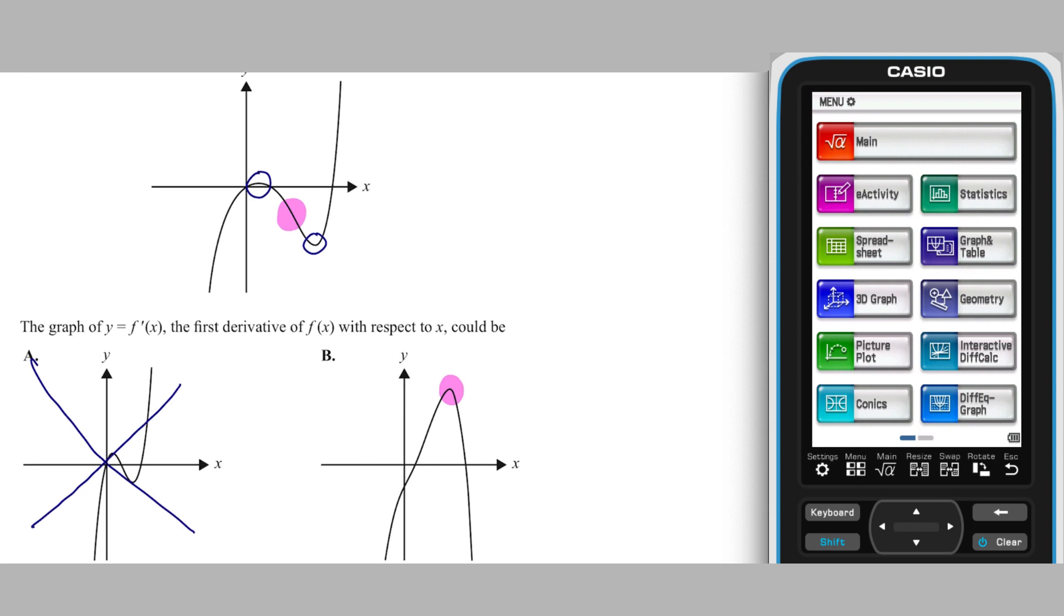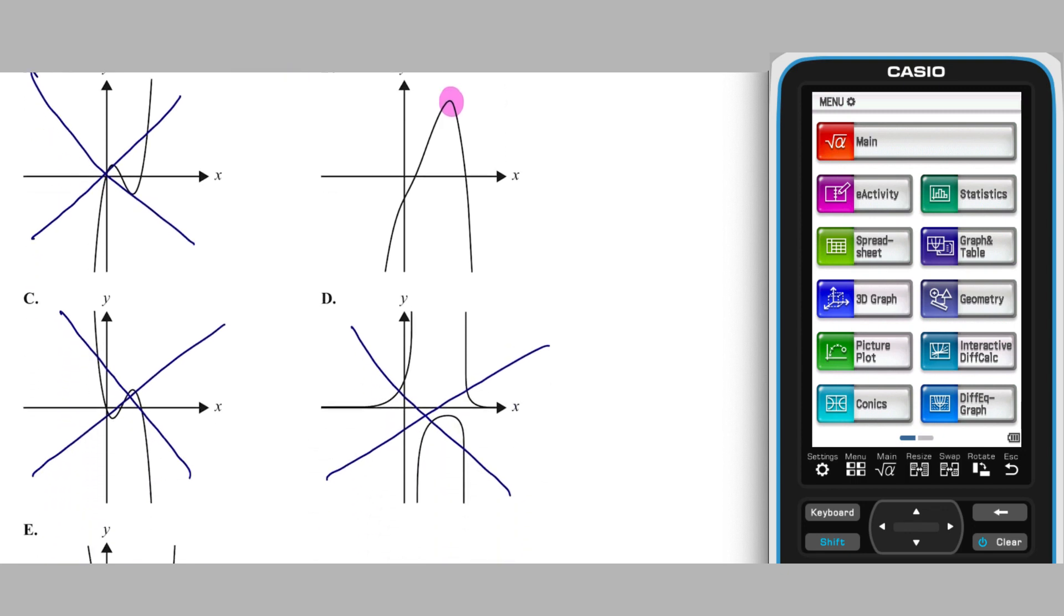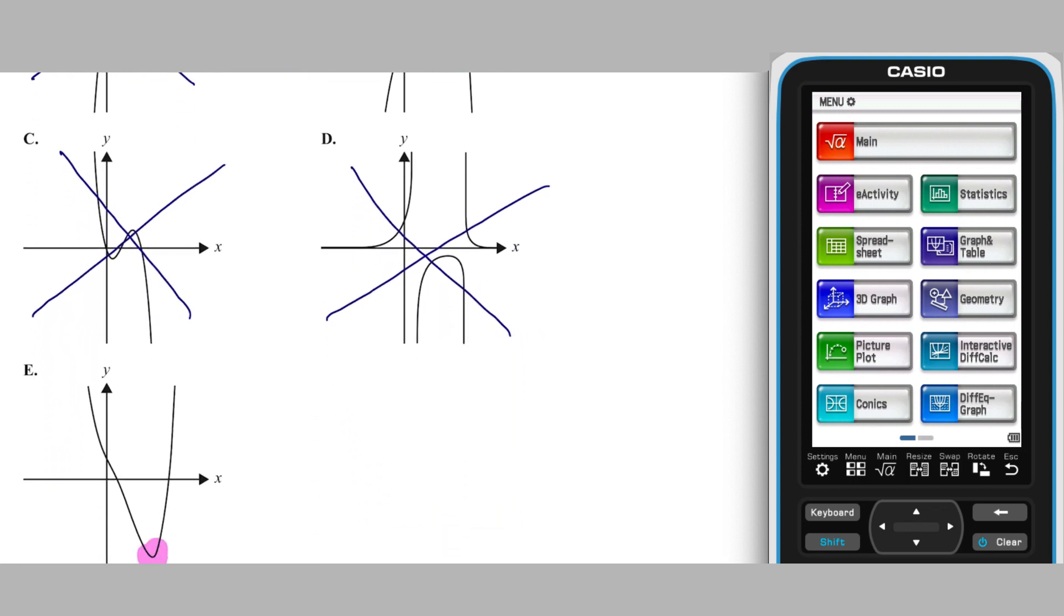Well, the inflection point on the graph of y equals f of x is the point of steepest negative gradient. Based on this, the gradient function for f dashed x is at a minimum, not a maximum, at that x value, and so the answer is e.